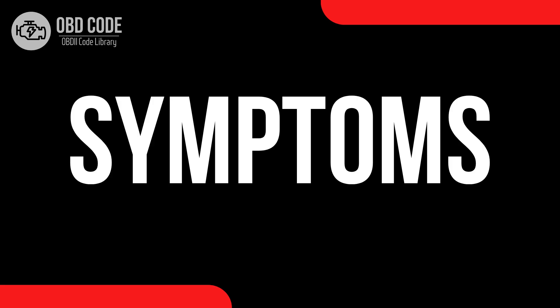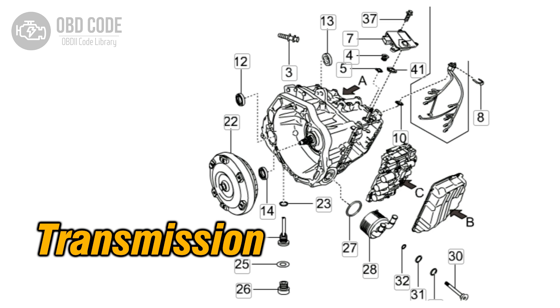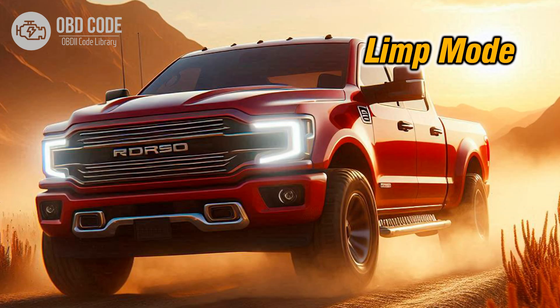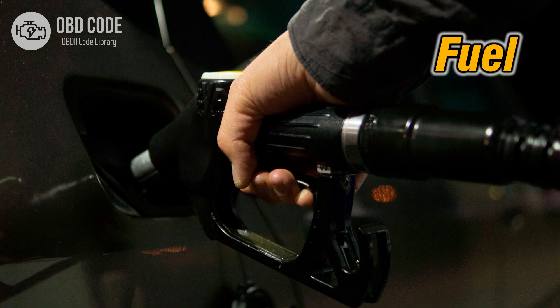Symptoms of code P0771: First, the check engine light illuminated on the dashboard. Second, transmission shifting issues such as harsh or delayed shifting, or failure to shift at all. Third, the vehicle may go into limp mode to prevent further damage. Fourth, decreased fuel efficiency due to improper transmission shifting.